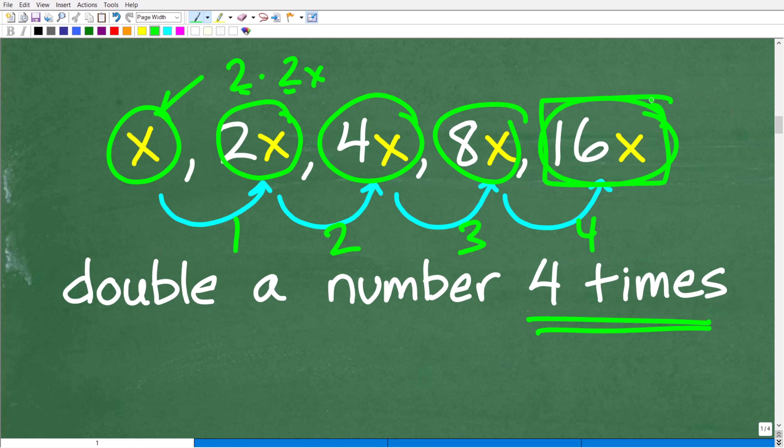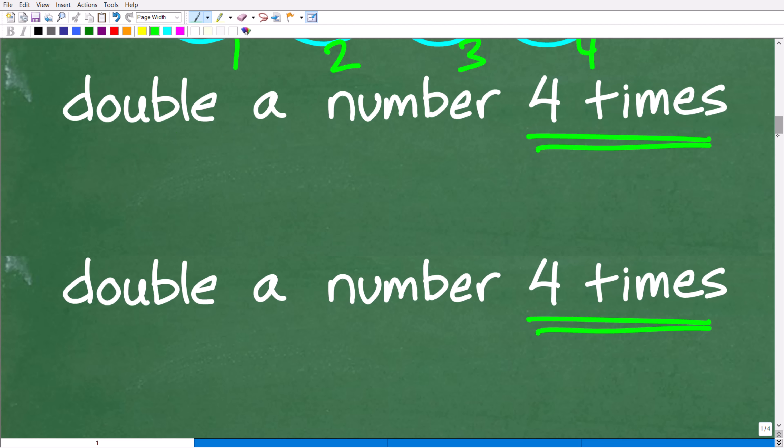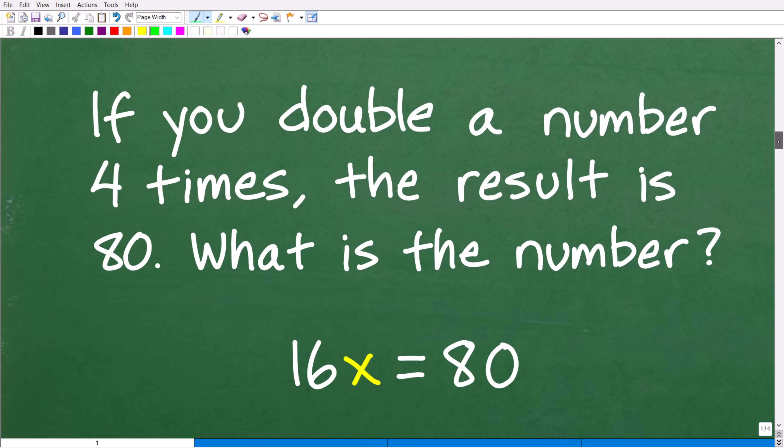Okay. So, the result of doubling this number four times is this variable expression 16x. Now, this is not going to do us any good unless we can build an equation. And the only way we're going to be able to build an equation is to go back to the problem. And the problem states the following, right? If you double a number four times, the result is.